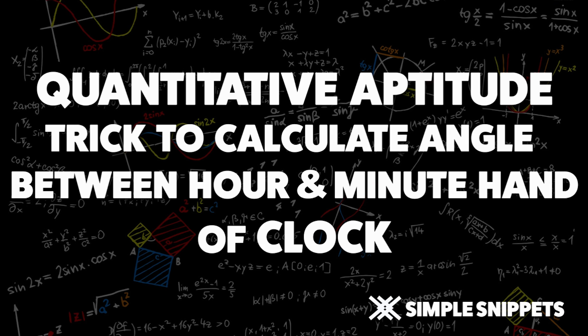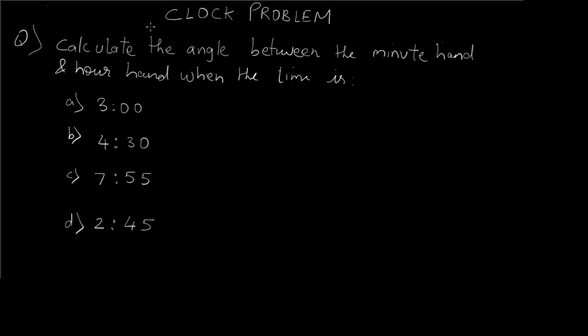So let's see how the trick goes. As you can see on the screen, we have a question wherein we have to calculate the angle between the minute hand and hour hand when the time is at 3:00, 4:30, 7:55, and 2:45. Now we don't need to see whether it's night or daytime - that is, we don't have to see if it is AM or PM because the angle is going to be the same.